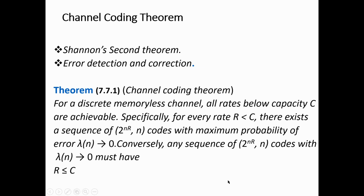Welcome to the digital communication lecture module. In this lecture we are going to discuss the channel coding theorem. Due to the unavoidable presence of noise in the channel, the bits or information we are transmitting will cause errors. Normally in digital communication, the information bits are either zeros or ones, and due to the presence of noise, errors may occur with these zeros or ones.